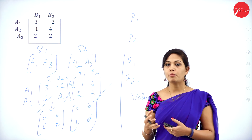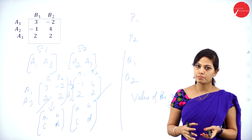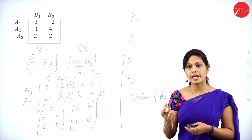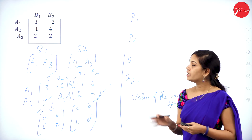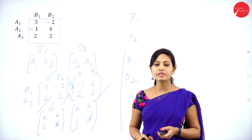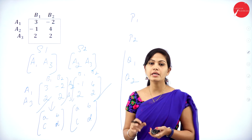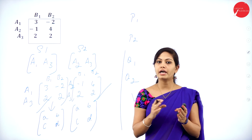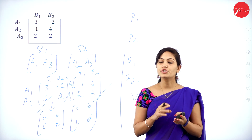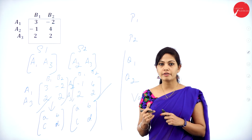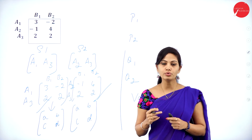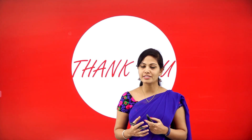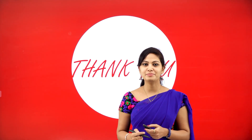If the value of the game is positive, it is a gain to player A; if negative, it is a gain to player B. This is the graphical method for m×2 games. I have already covered 2×n games and today explained m×2 games. In my next session I will introduce a new concept in game theory. Thank you.